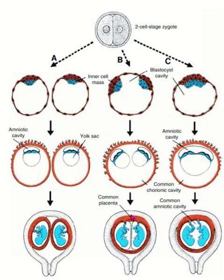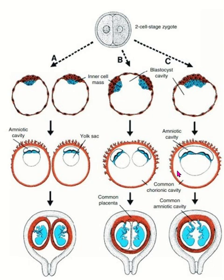In diamniotic-monochorionic twin pregnancy, a single placenta is developed and there are two separate amniotic cavities which are fused with the single chorionic cavity. If the separation process starts even later in development, a single blastocyst is formed with a single trophoblast, and two bilaminar germ discs form from the embryoblast, but there is a single amniotic cavity, single yolk sac cavity, and single chorionic cavity. The amniotic cavity enlarges and fuses with the chorionic cavity, and a single placenta is developed.